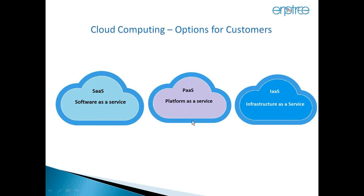In SaaS you get application access with no functional customization but auto-upgrades are possible. In PaaS you get application access with functional customization allowed but auto-upgrades are not possible. IaaS works similarly to PaaS with an additional advantage: within the same server, you can install third-party applications as well. Oracle provides access to those servers where additional application installations are possible.